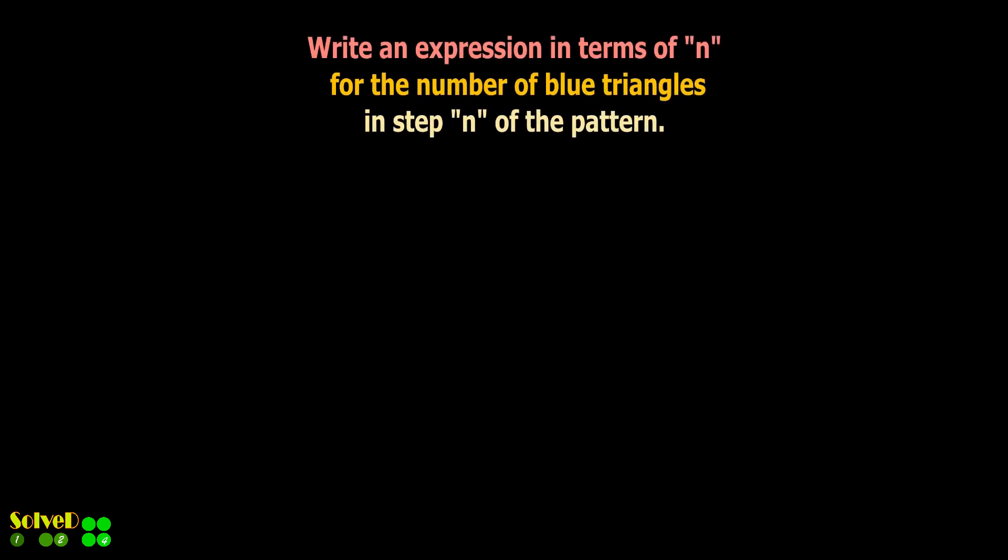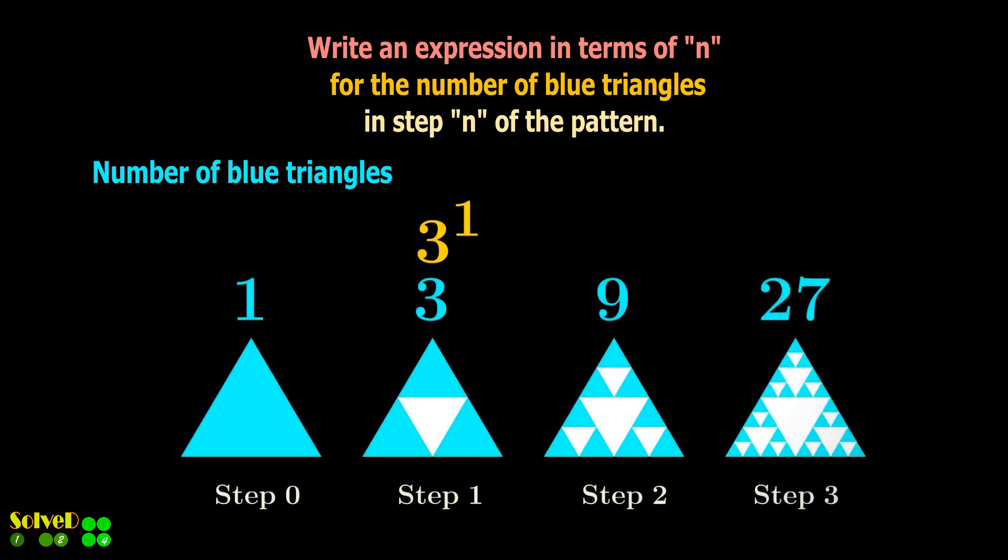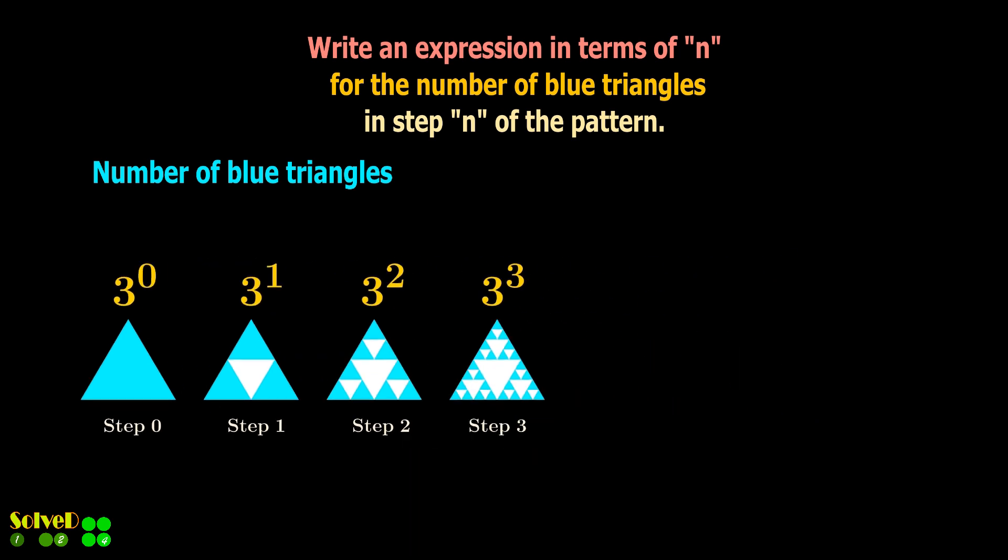Let's find the general term for the sequence of the number of blue triangles at step n. Since our common ratio is three, we see that this series can be written as multiples of three, as shown. So here is the number of blue triangles in step n.